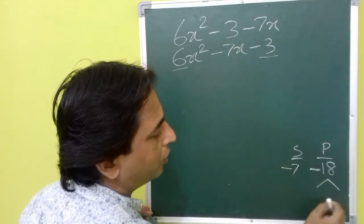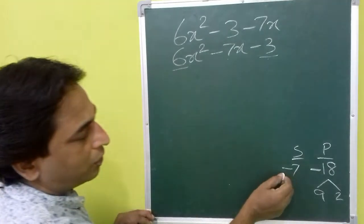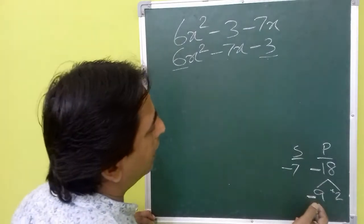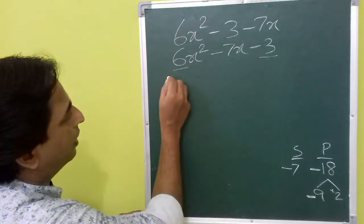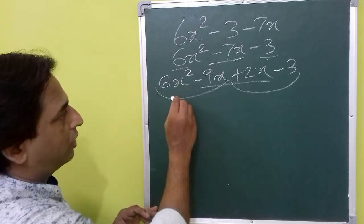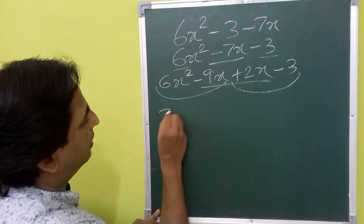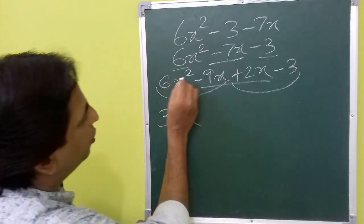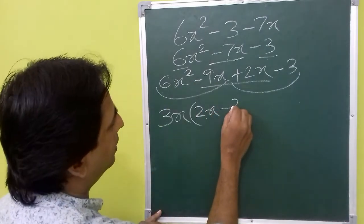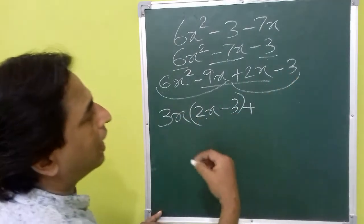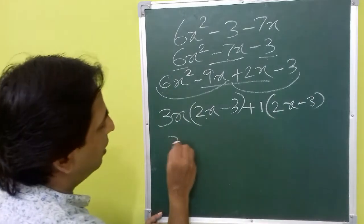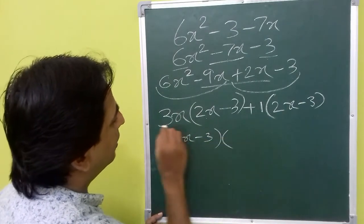We can find that 9 times 2 is 18. To get negative 7 we keep the bigger number negative and the smaller positive, giving minus 9 and plus 2. So we rewrite it as 6x squared minus 9x plus 2x minus 3. Taking the common factor from each group: 3x is common in the first group, giving 3x times 2x minus 3. From the second group we take 1 as common, giving 1 times 2x minus 3. Now 2x minus 3 is common in both terms.